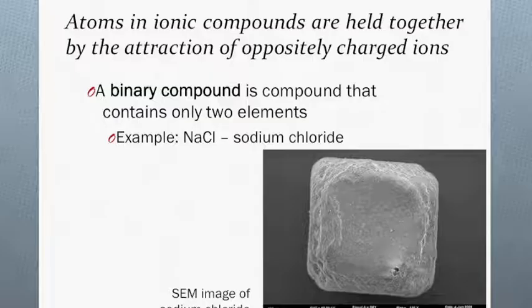A binary compound is a compound that contains only two elements. For example, the compound with the formula NaCl is a binary ionic compound because it's formed from just one metal and one non-metal. We call this compound sodium chloride, but you're more familiar with it as common table salt.